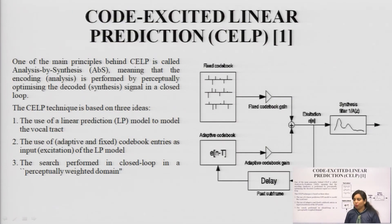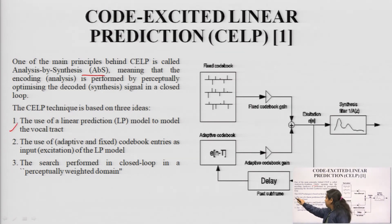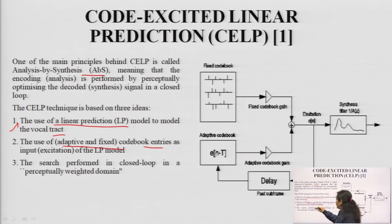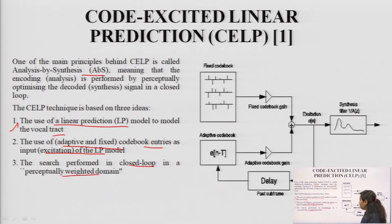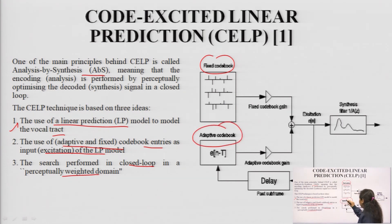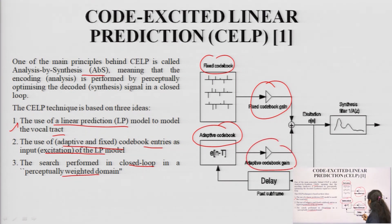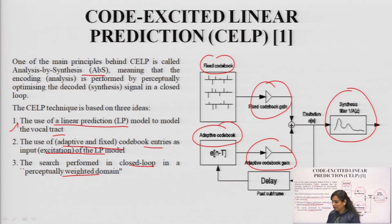CELP — code excited linear prediction — is based on the analysis-by-synthesis consideration. It is based on three ideas: the use of a linear predictive model to model the vocal tract; the use of adaptive and fixed code book entries as excitation of the LP model; and a search performed in the closed loop in a perceptually weighted domain. There is a fixed code book using a kind of line coding and an adaptive code book which is variable. There are fixed and adaptive code book gains, a past subframe connected in the feedback path, and at the output a synthesis filter with transfer function 1/A(Z).